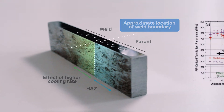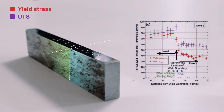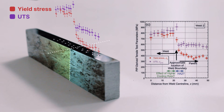On this plot of the UTS and the yield stress at each of the points that we've indented, we can see a change in properties as we go towards the zone affected by cooling due to the parent metal, through the heat affected zone of the parent metal, and finally into the parent metal itself.